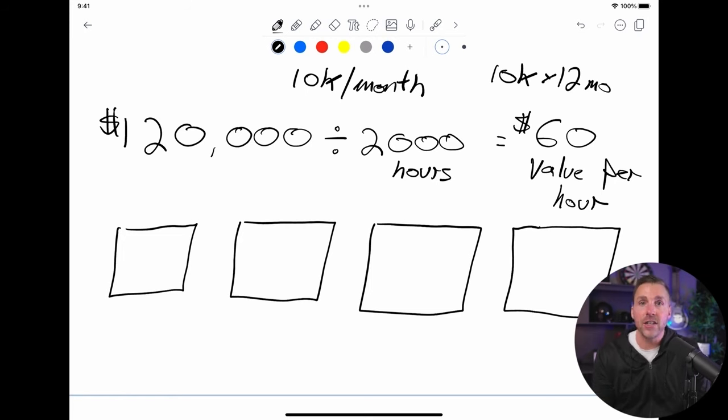This means that if this is your goal, your value per hour is worth about 60 bucks. So you've got to start evaluating different opportunities as they come across your plate and start assigning a monetary value to them, whether they're going to be in alignment with where you're trying to go, in alignment with the value that you have.